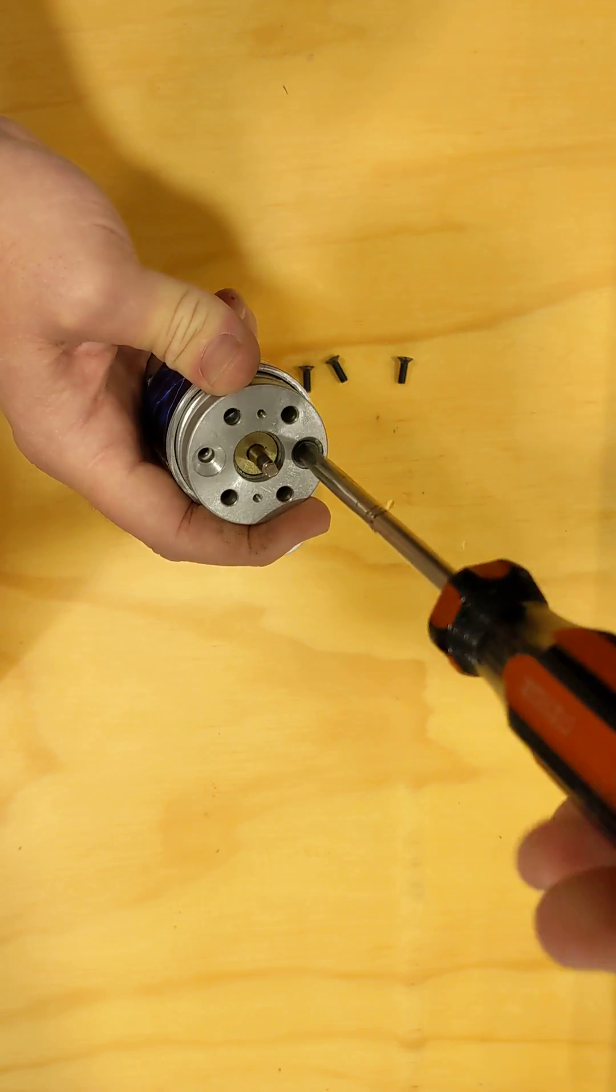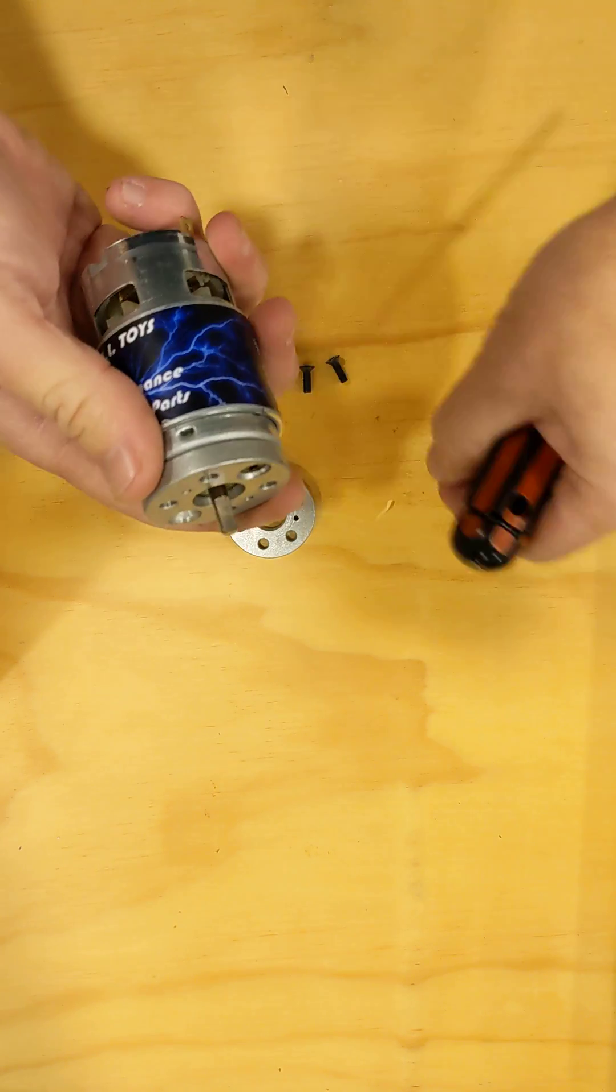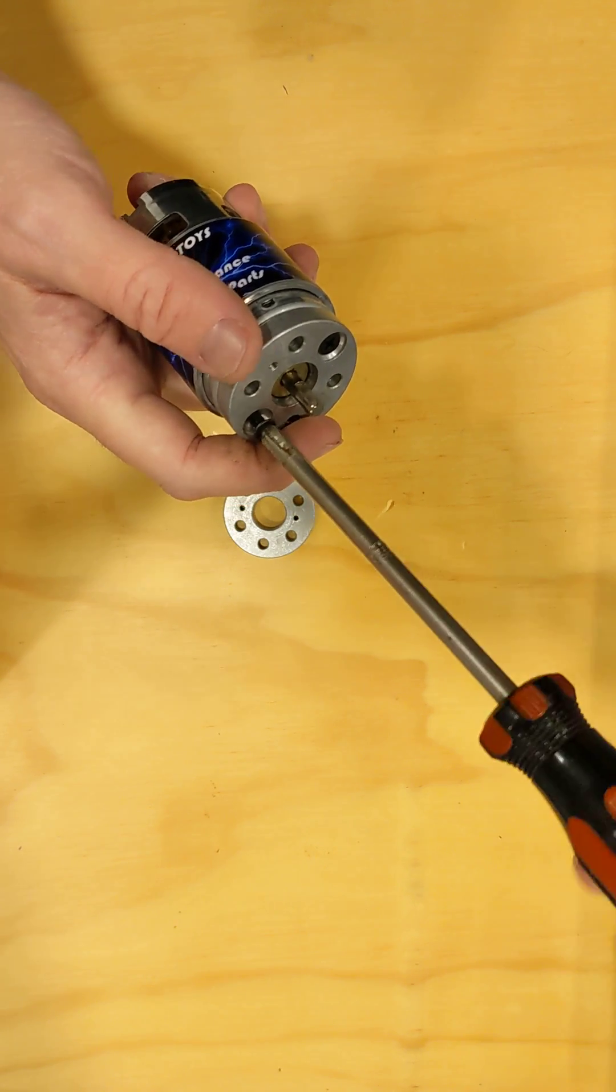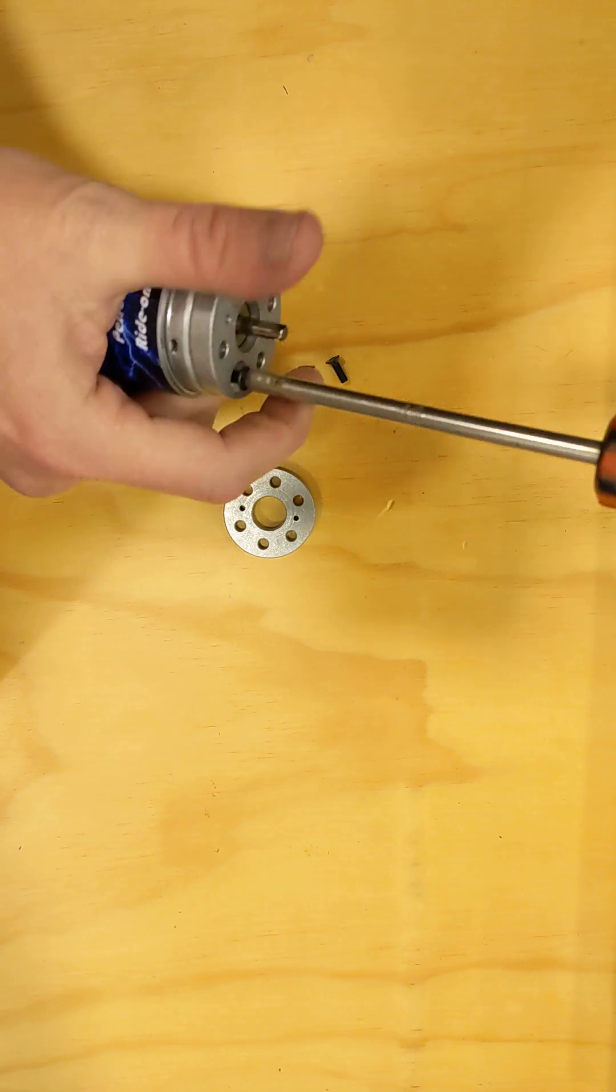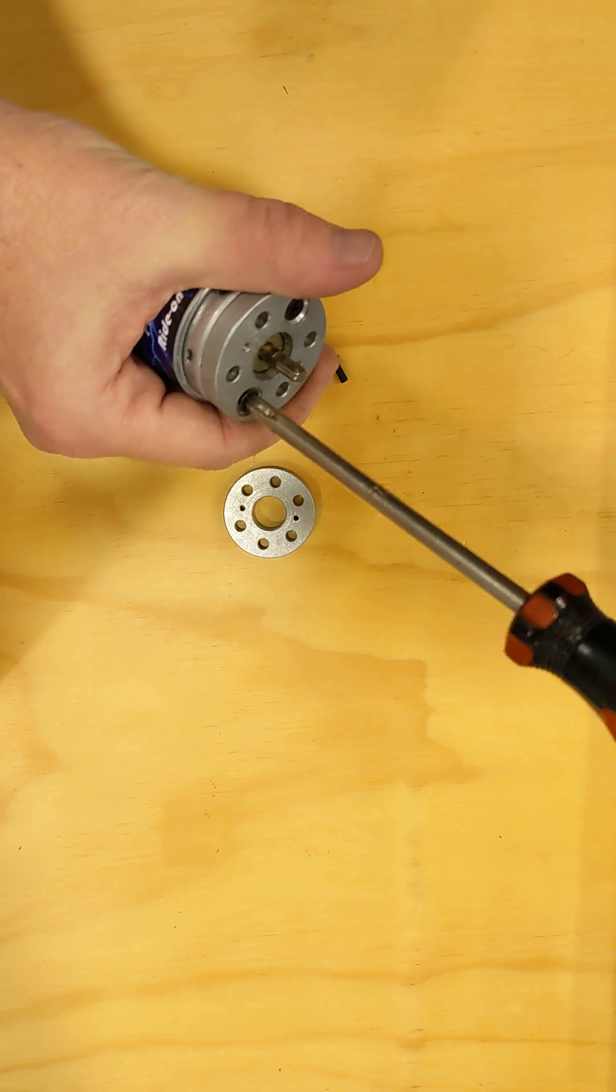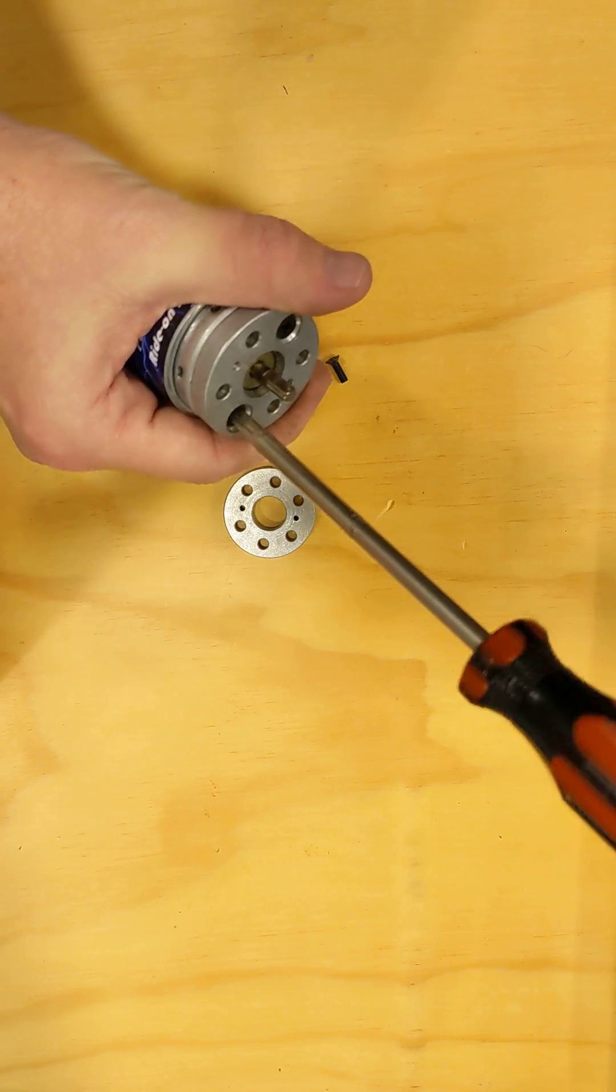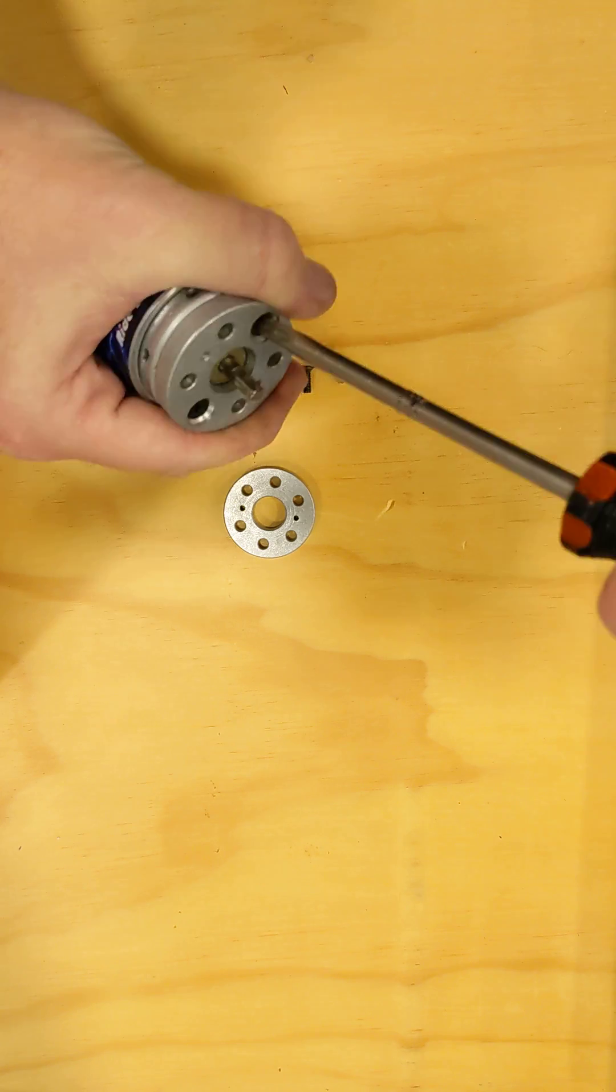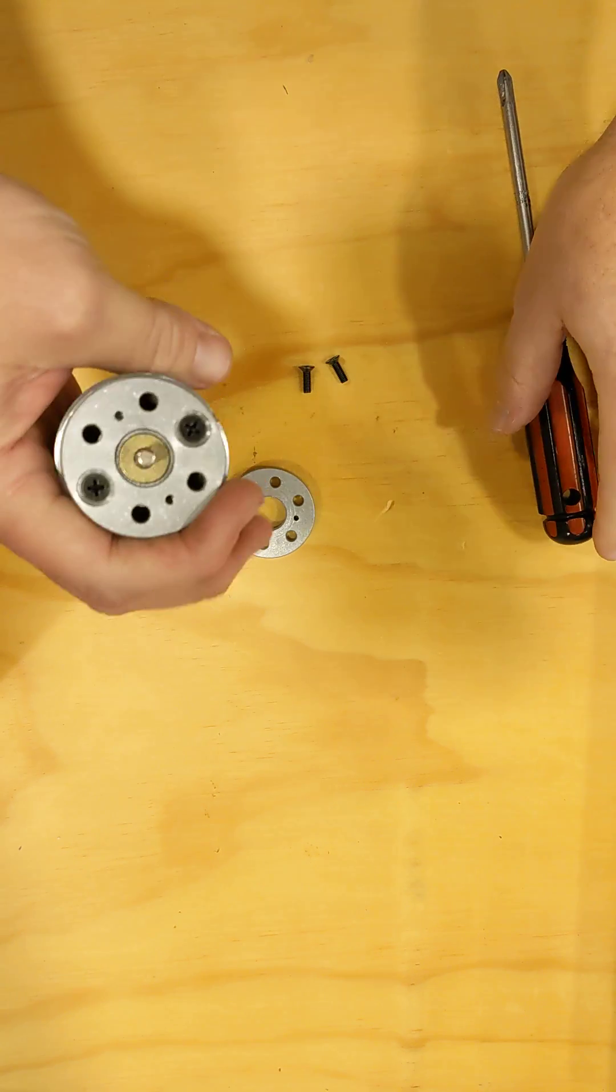And what's nice with these is it's really easy to get your pinion gear onto the motor afterwards. Now you want to use threadlock whenever you're screwing into the metal. Tighten these down. You can put one in a little bit, then you put another one in a little bit, and that is snug down tight. Nice and easy.